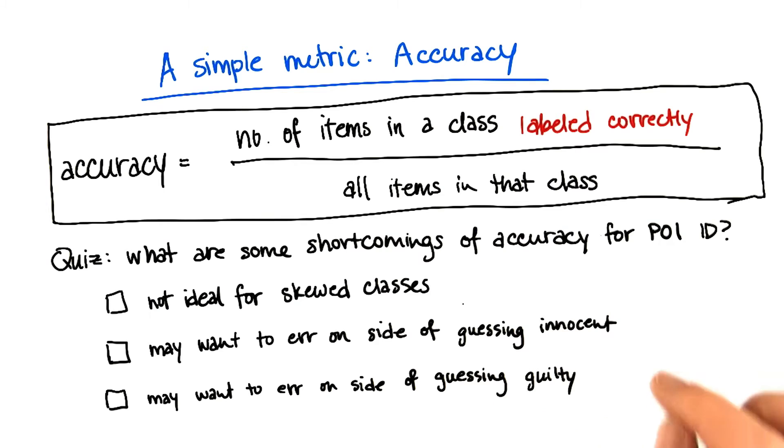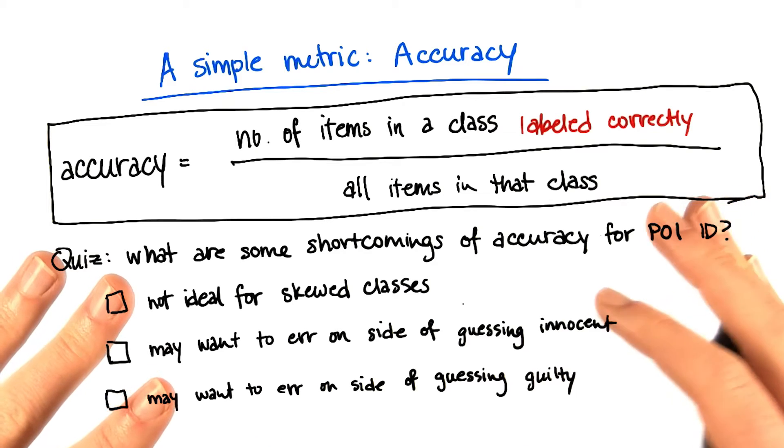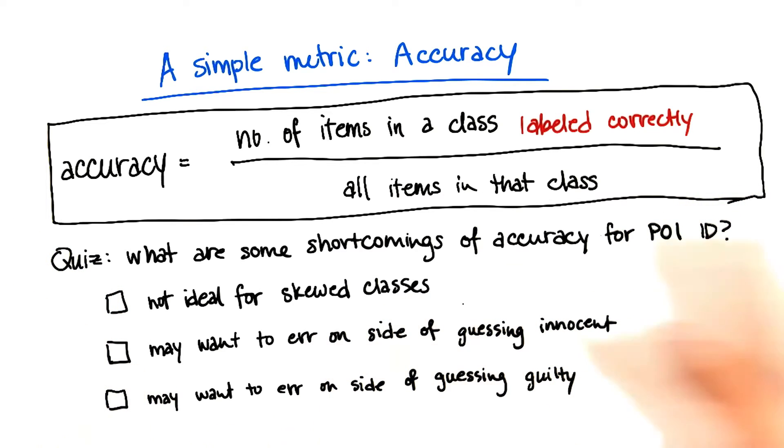Another possibility is that maybe depending on exactly what you mean by identifying a person of interest, you might want to err on the side of guessing that someone is innocent when you're in doubt. That if, for example, as a result of this, your machine learning algorithm is identifying people who should be thrown in jail.